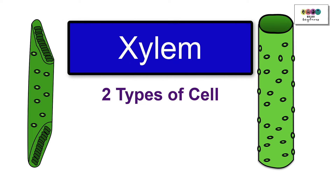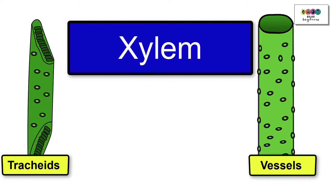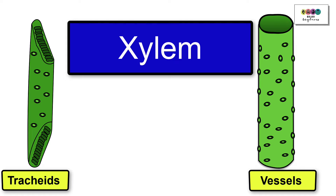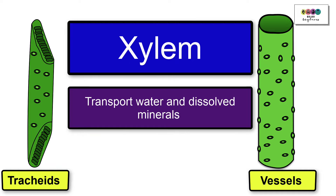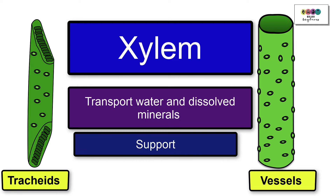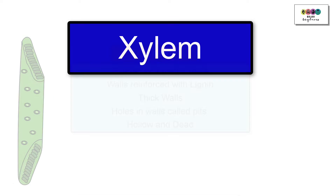There are two types of xylem cell: xylem tracheids and xylem vessels. The function of xylem is to transport water and dissolved minerals upwards through the plant. Xylem has an additional function: support.